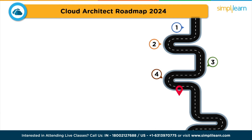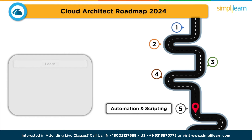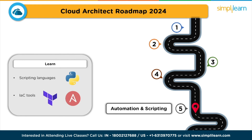The next step is automation and scripting. Automation plays a pivotal role in cloud architecture. Learn scripting languages like Python and automation tools. Infrastructure as Code tools like Terraform and Ansible help automate the provisioning and management of cloud resources.